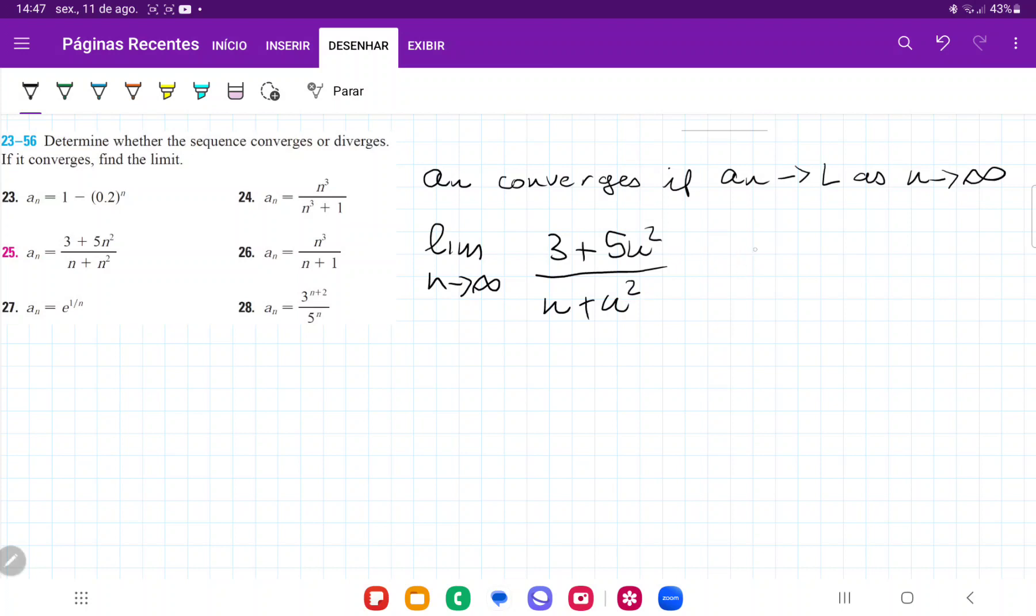And so over here, what we want to do is we want to divide by the highest power, so we're going to multiply this by 1 over n squared divided by 1 over n squared. The reason that we want to divide it by the highest power is because we want to have a bunch of rational expressions.